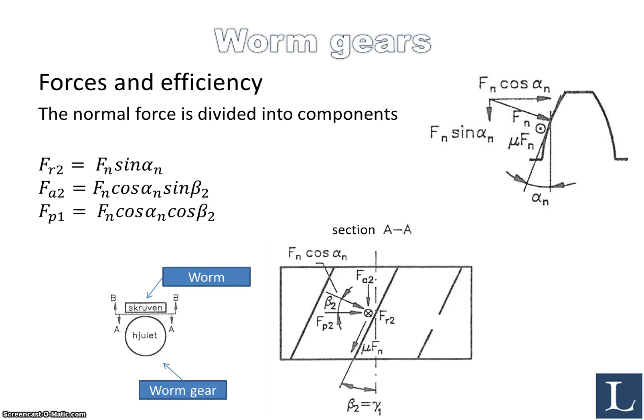In a similar manner we can do the same thing for the worm gear. Now we have section AA, which means that we are looking at the worm gear here, and again we have the radial, axial, and peripheral forces related to the normal force using the pressure angle, and this time we're using beta_2, which is the angle down here.